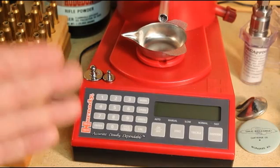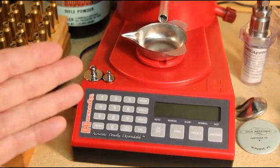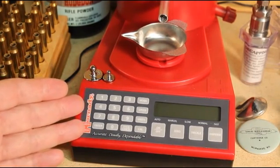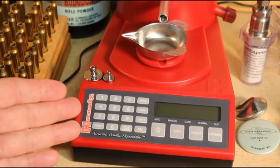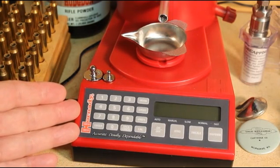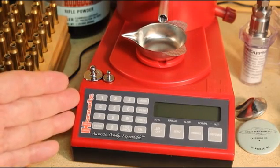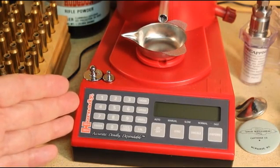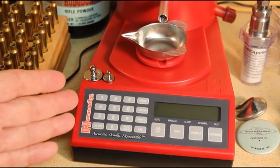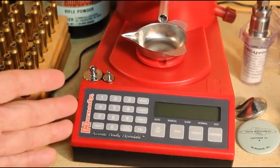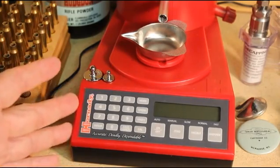So one question is, this unit made by Hornady costs about $100 less than the Automatic Powder Dispenser made by RCBS. So the question is, is this unit any good? Since it costs less, is it cheaper or is it not as good? Is it not worth the money?